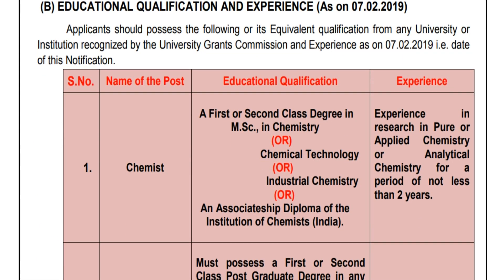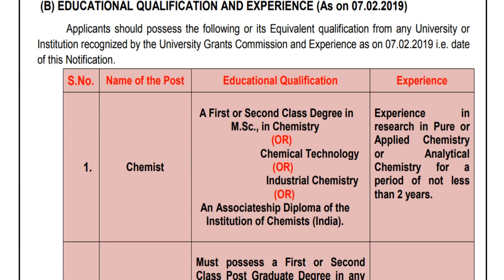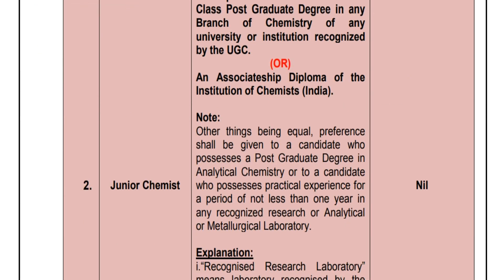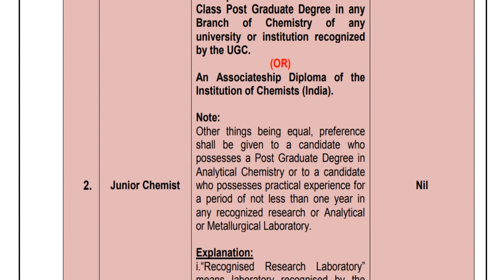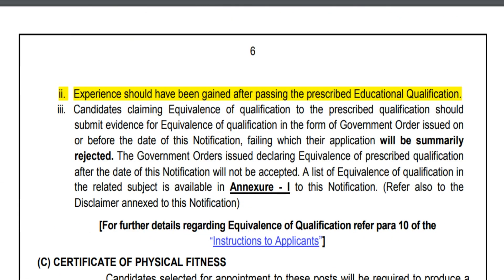Educational qualification: for chemistry posts, a first class or second class degree in chemistry, chemical technology, or industrial chemistry, or an associative diploma of the institution of chemistry is required, with experience of not less than 2 years. For junior chemistry posts, a first class or second class postgraduate degree in any branch of chemistry, or an associate diploma of the institution of chemistry is required, with experience of not less than 2 years.